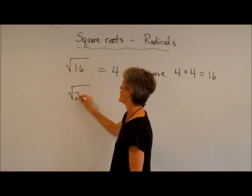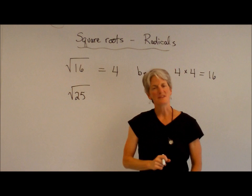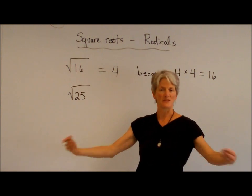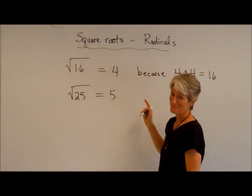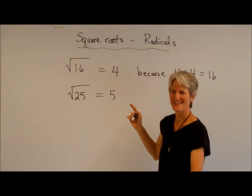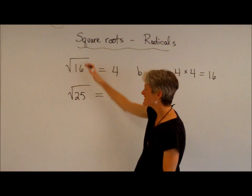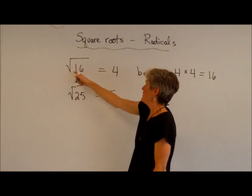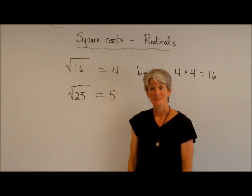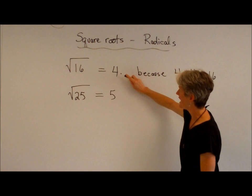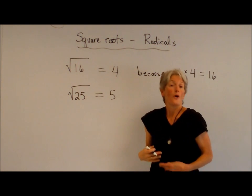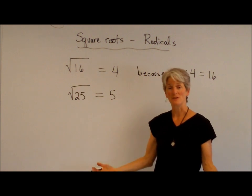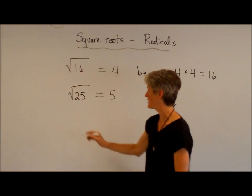Same thing, square root of 25. What positive number times itself equals 25? That would be 5 because 5 × 5 = 25. These are really nice numbers. In fact, these are rational. As you pointed out, Mr. Haas, in our last video, because these square roots are giving us nice whole numbers, nice integers, these are called perfect squares.